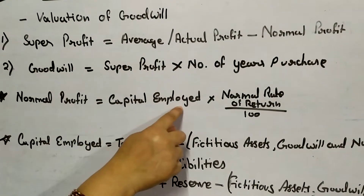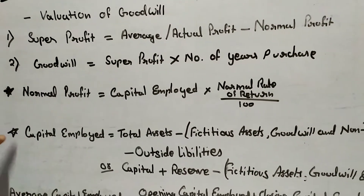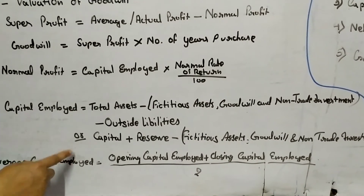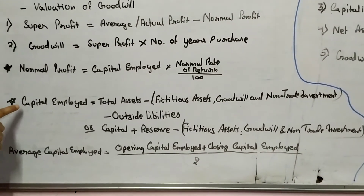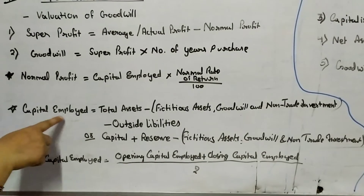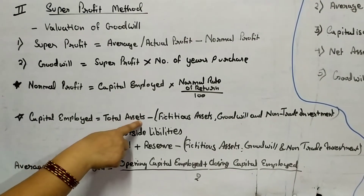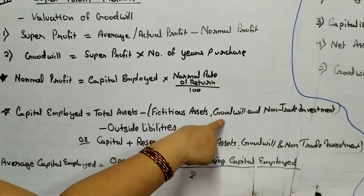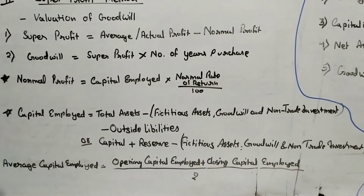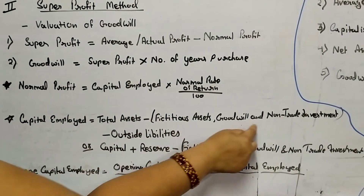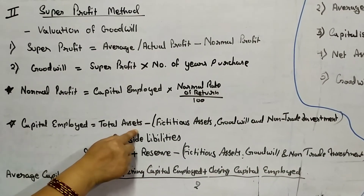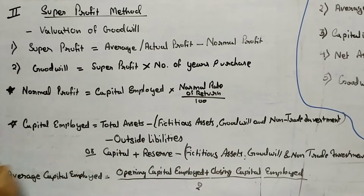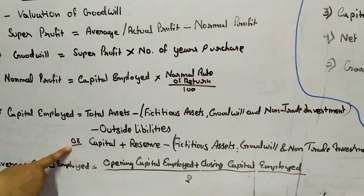How do we calculate capital employed? Capital employed is calculated by three ways. The first way is: capital employed equals total assets minus fictitious assets, goodwill, and non-trade investment — these three assets are deducted from total assets — and then we deduct outside liabilities.